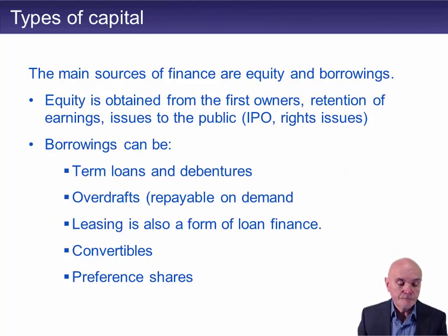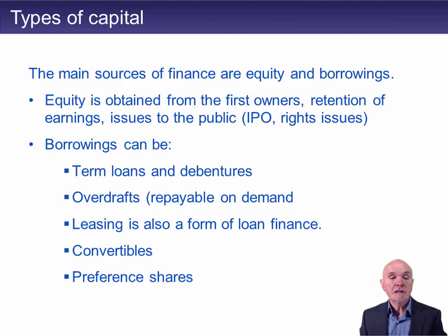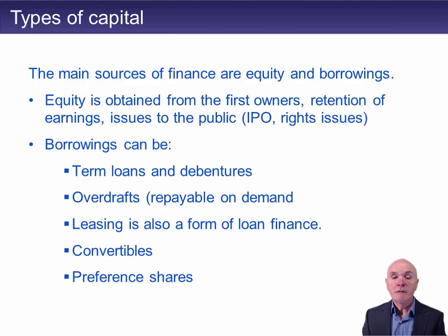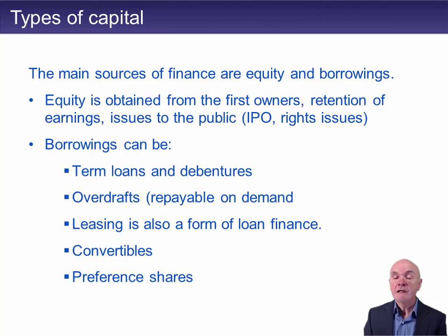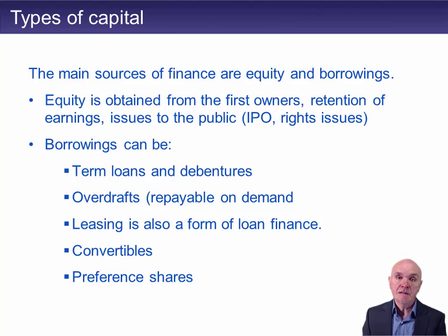Types of capital. The main source of capital for a business is equity, or you can have loan capital or borrowings. Equity capital is raised initially from the first owners, and then from retention of earnings. Then, if you need more capital, you can issue more shares, and perhaps even go for a public offering — an IPO, an initial public offering — and then subsequently it will be normal to raise more share capital through rights issues, such as a one-for-five rights issue, where you give pre-emptive rights to existing shareholders.